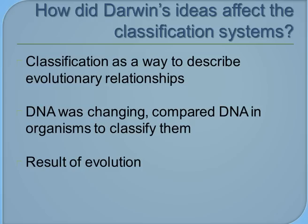So how did Darwin's ideas affect the classification systems? His idea of evolution affected the system because it made biologists begin to see classification as a way of describing evolutionary relationships. They realized DNA was changing, and it was a result of evolution. This changed the way organisms were classified. And that is how Darwin's ideas affected the classification system.